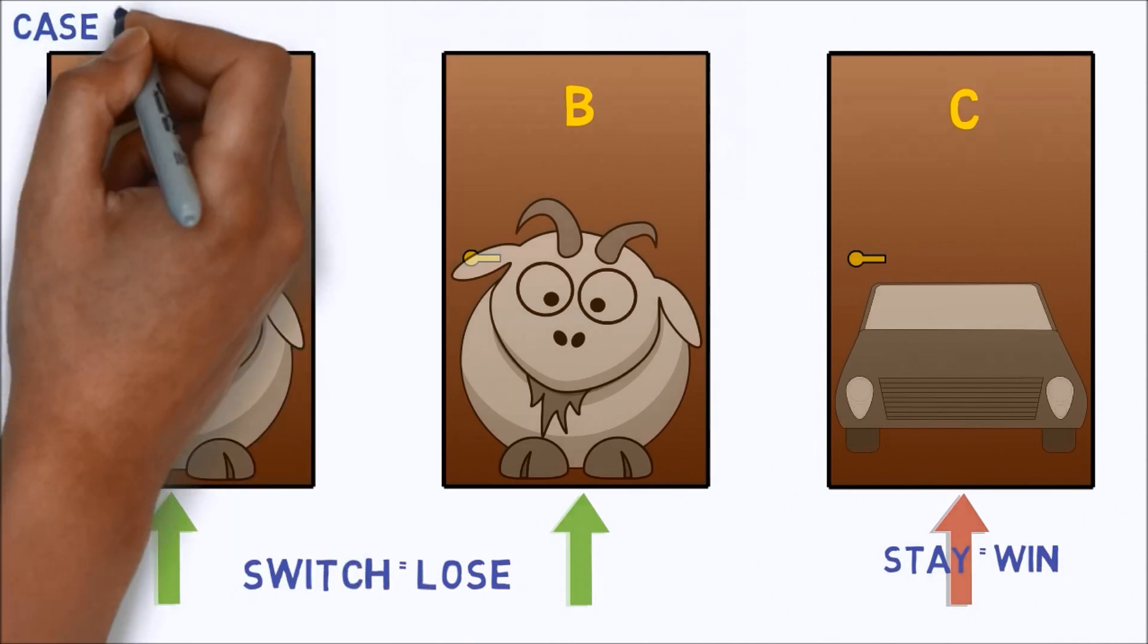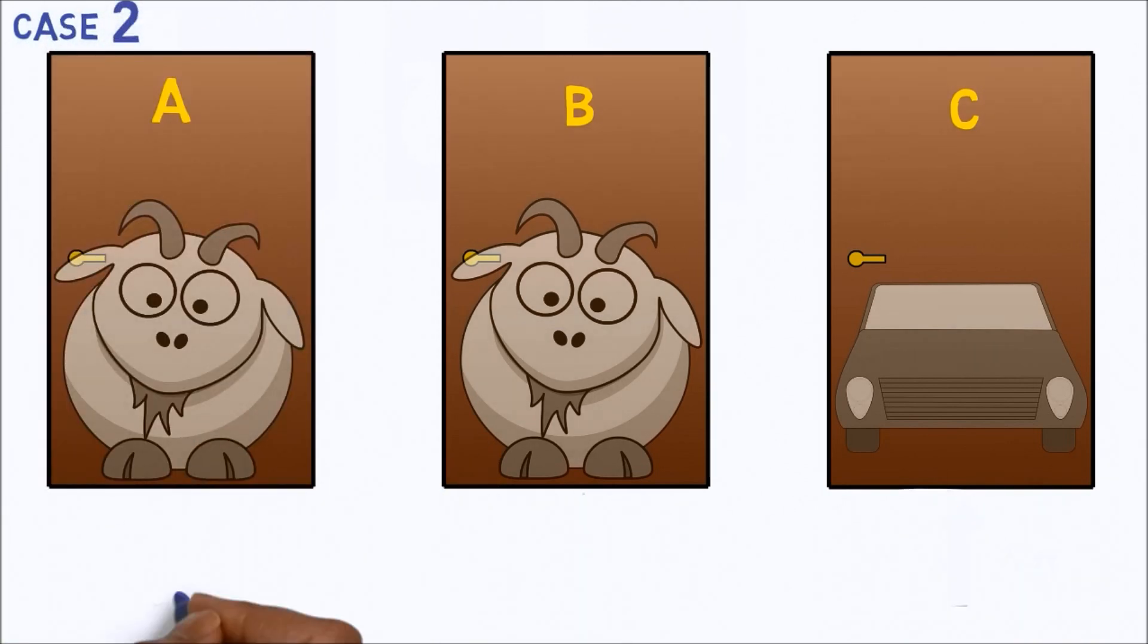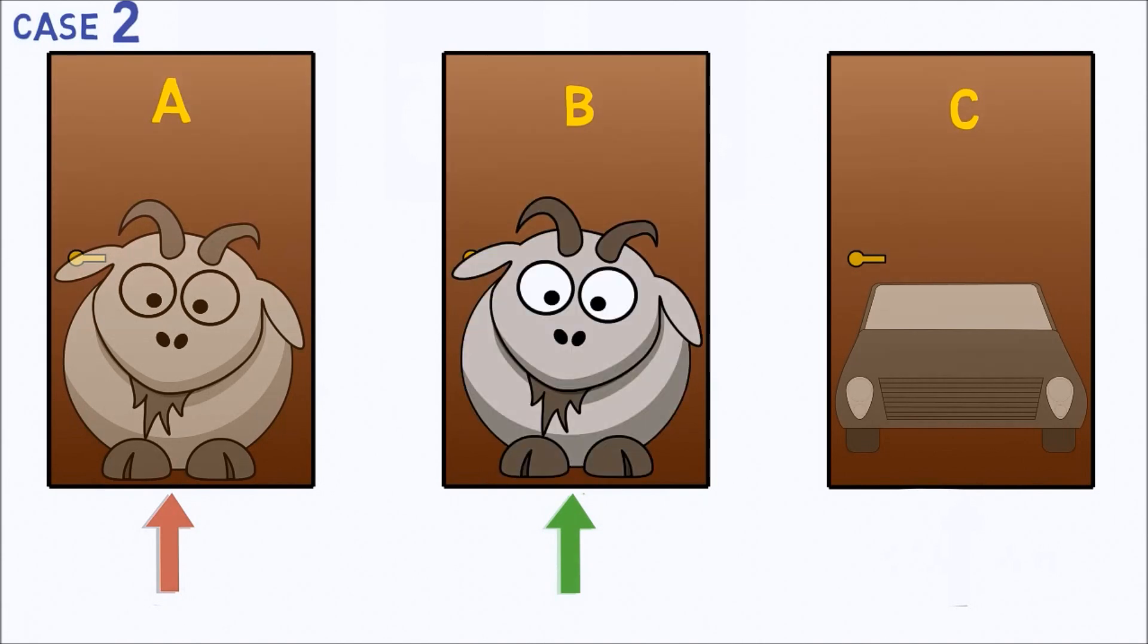Second, the contestant first chooses door A. He is then shown door B, which has a goat behind it. If he switches to the remaining door, he wins the car. Otherwise, he loses.